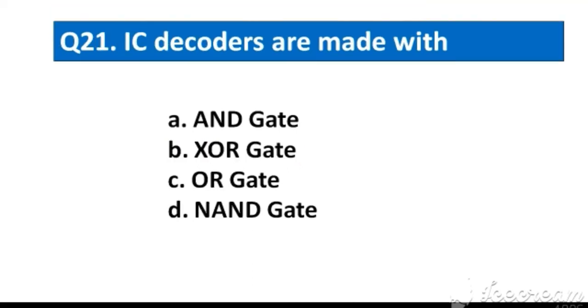Question number 21. IC decoders are made with option A. AND gate, B. XOR gate, C. OR gate, D. NAND gate.